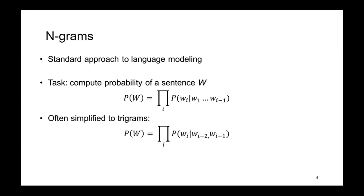For example, if you want to compute the probability that after seeing 'New York' the next word will be 'City,' you look at your training data — say English Wikipedia — and find, for example, 1000 occurrences of the bigram 'New York' and 700 occurrences of 'New York City.' So the probability that 'City' follows 'New York' is going to be something like 700 divided by 1000, which is 70%. That's a rough idea of how trigrams work.